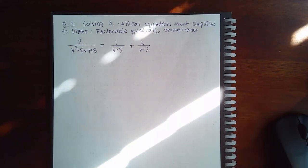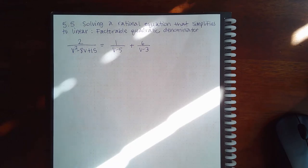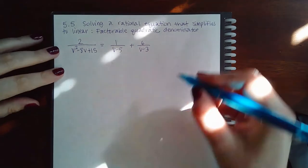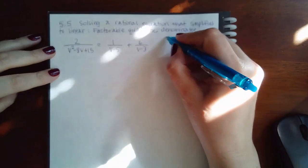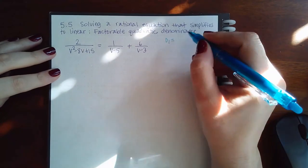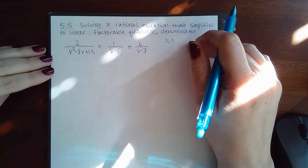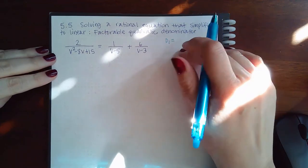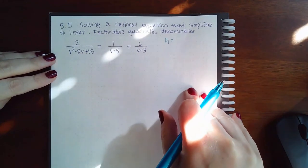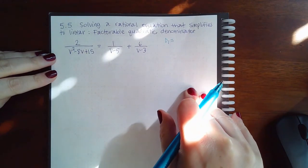Here we are at 5.5, solving a rational equation that simplifies to linear with a factorable quadratic denominator. If we take denominator one, remember the key thing: your denominators must be in their factored forms before figuring out the least common denominator.